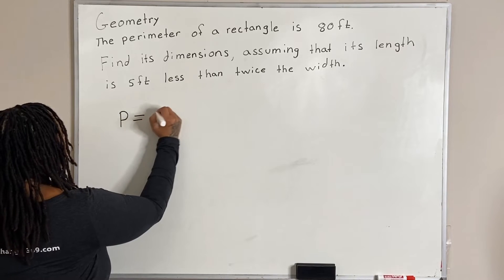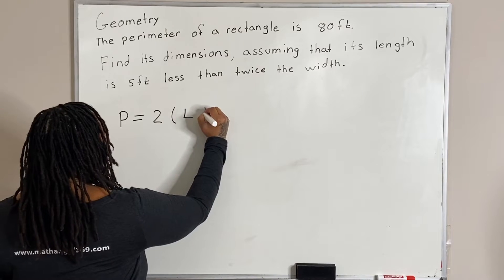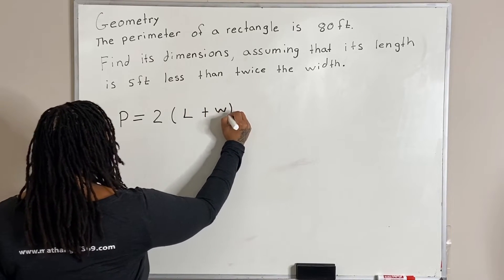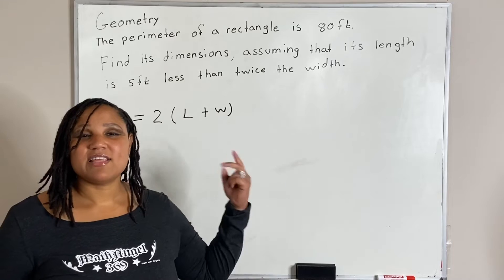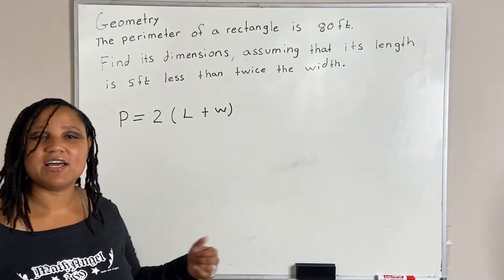Perimeter is equal to 2 times the length plus the width. And all we do is plug in the necessary pieces of information that we are given into the formula and solve.